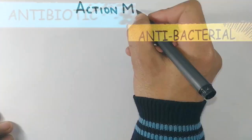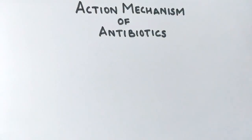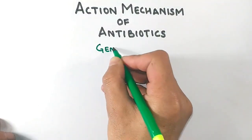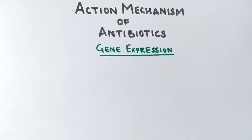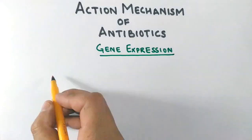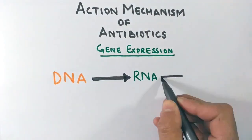First, let's see the basic overview of the action mechanism of antibiotics. Antibiotics work at three levels. The first level is at the gene expression level of bacteria. Gene expression is a three-step process where we see the flow of information from DNA to RNA to protein.